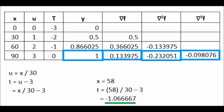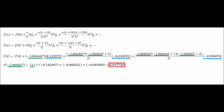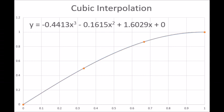We could also use a backward difference table. Notice that x equals 58 degrees becomes t equals negative 1.0666 repeating. Again, note the change in sign. We use t plus 1 and t plus 2 instead of t minus 1 and t minus 2. Plugging the numbers from our table into the expression gives me the same result as forward difference.